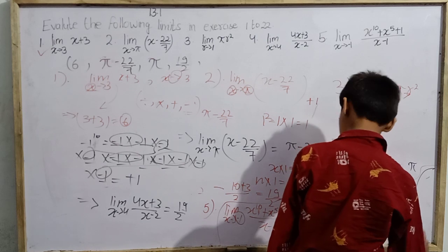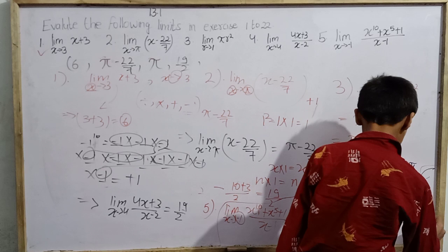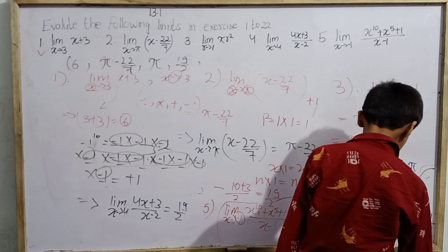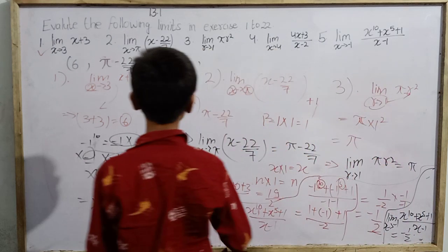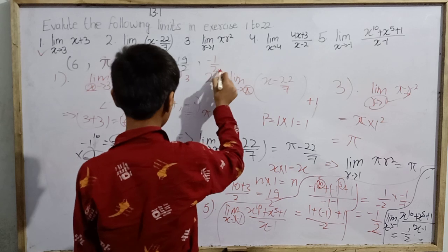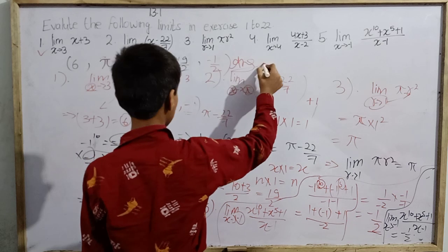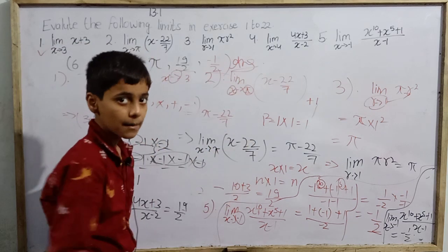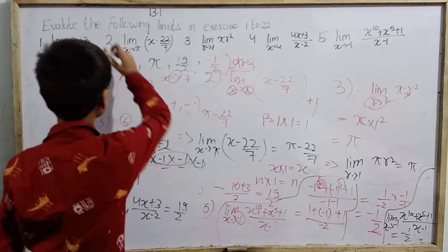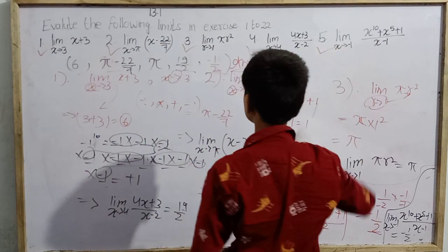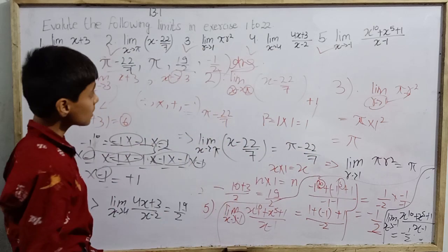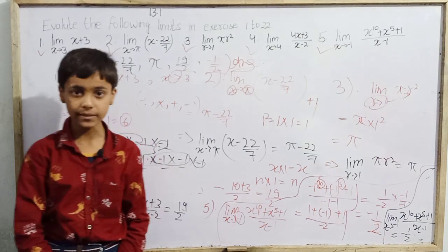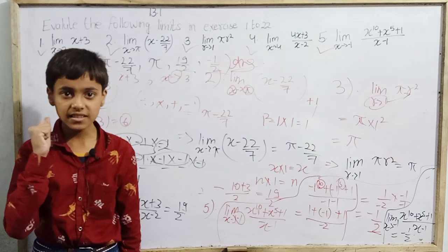So the final value of the fifth question — limit x tends to −1 of (x¹⁰ + x⁵ + 1)/(x − 1) — comes out to be −1/2. To summarize: the answers are 6, π − 22/7, π, 19/2, and −1/2. Five questions from Class 11th NCERT Mathematics have been solved. Thank you for watching this video. Jai Hind, Jai Bharat!